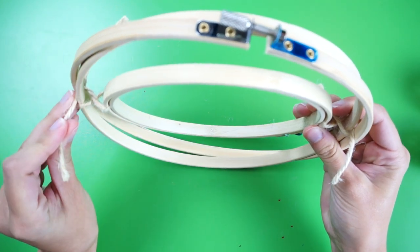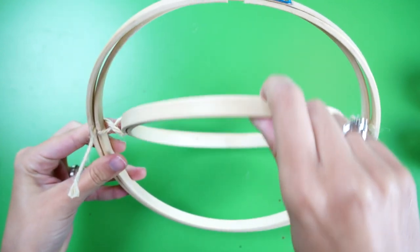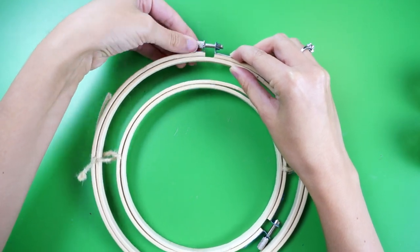You don't want it to hit the other hoop when it spins. Now you can tighten the largest hoop since you're done with that one.